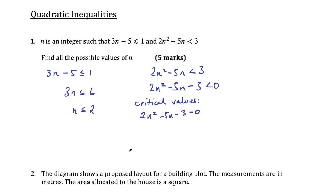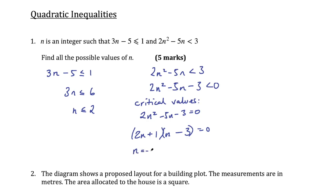Look to see if you can factorize it. If you can't, use the quadratic formula or completing the square. In this case we can factorize. Think of factors of 3 and 2 that make 5. We can use 3 and 1 — it needs to be negative 5, so negative 6 plus 1 gives negative 5. So we get (2n + 1)(n - 3) = 0. That gives 2n² - 5n - 3 = 0.